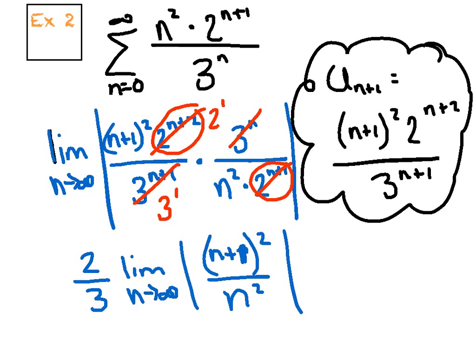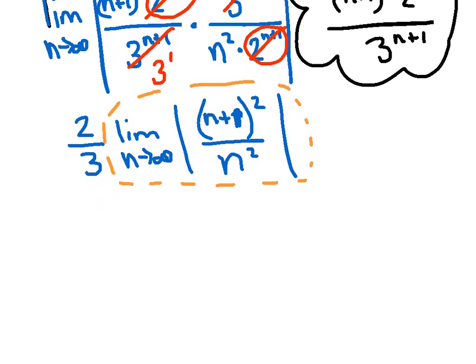As far as evaluating that limit, you're more than welcome to foil out the numerator, but I think that's a waste of time. You can visualize the biggest term would be n² on top and n² on the bottom, so that limit has a value of one because it's same over same. Two-thirds times one turns out to be two-thirds. Because that's smaller than one, we could say this series definitely converges according to the ratio test.